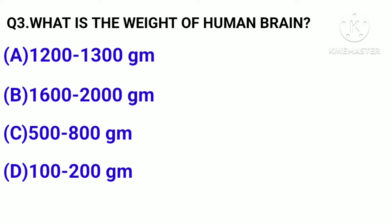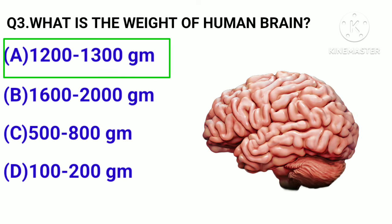Question number 3. What is the weight of the human brain? Correct answer: Option A, 1200 to 1300 grams.